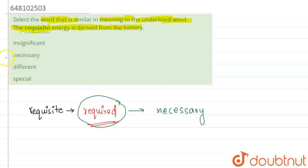So our answer will be what? Our answer will be clearly option number B that is necessary. Understood? Thank you.